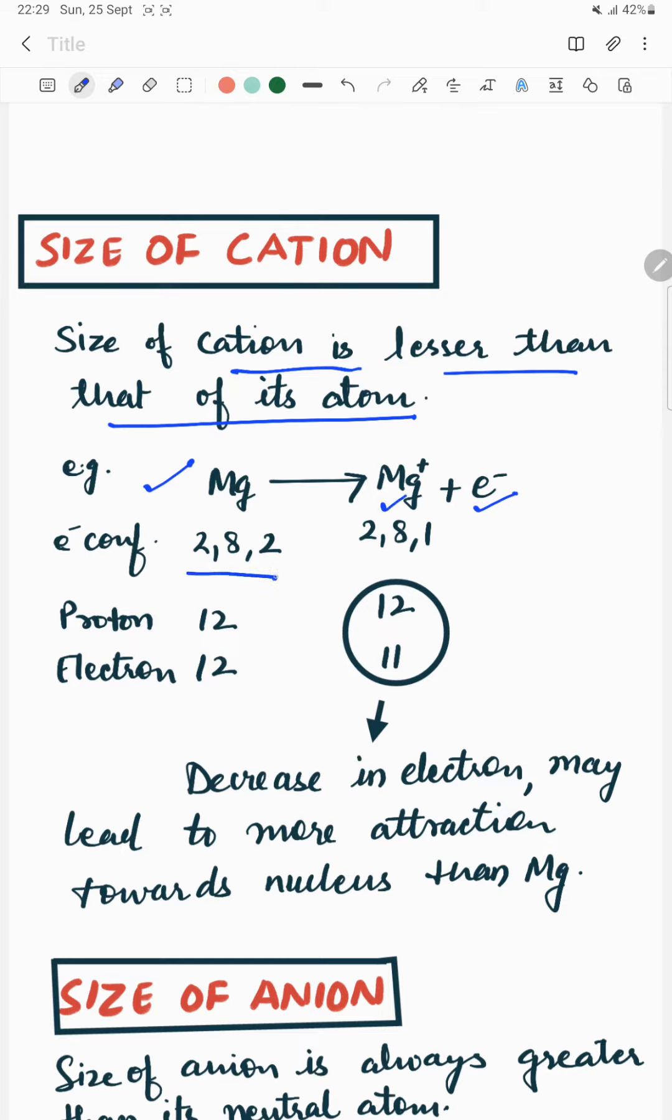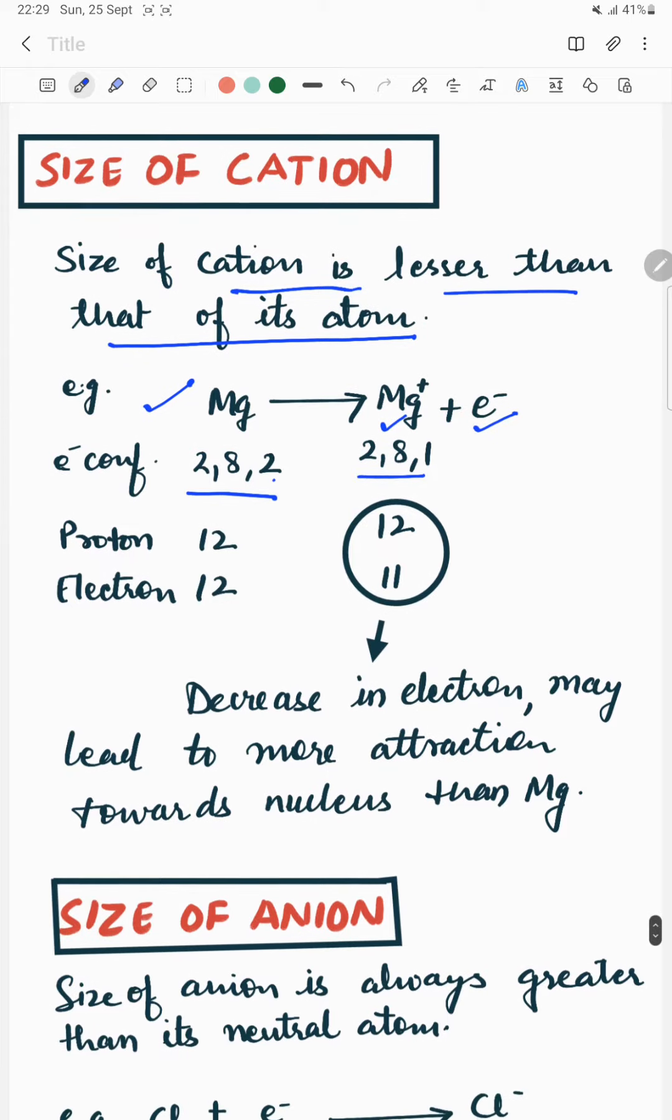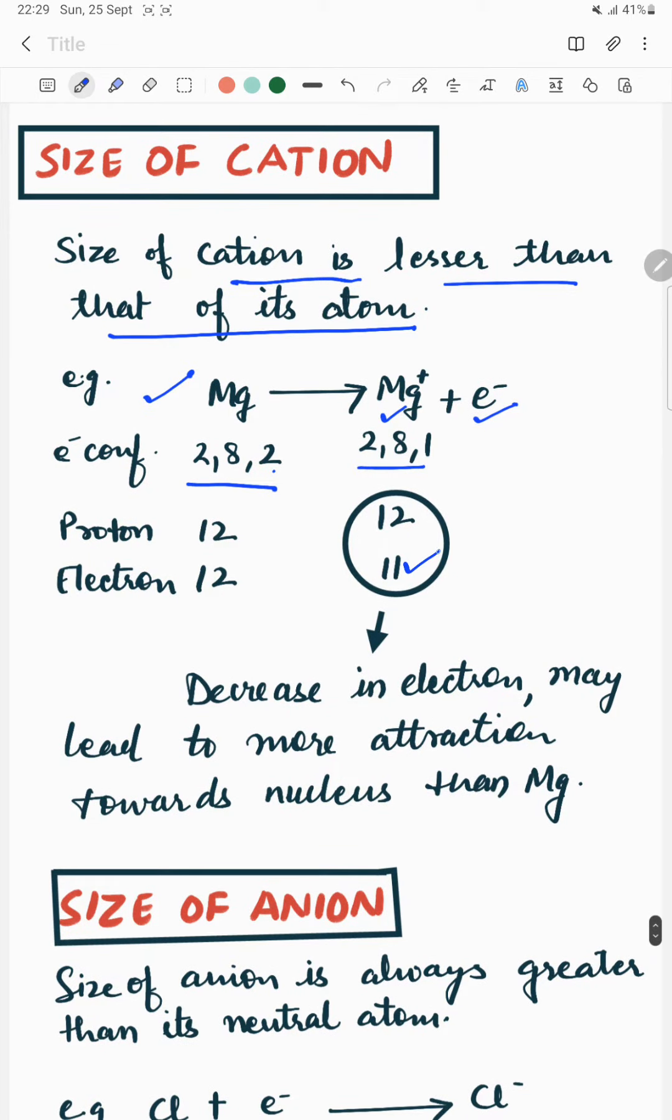In this case, the electron configuration is 2,8,2 and 2,8,1. In case of Mg plus, if we compare proton and electron of both Mg and Mg plus, then we get in Mg plus the electron is one less. Decrease in electron may lead to more attraction towards nucleus than magnesium.